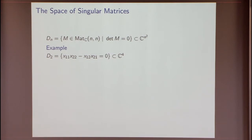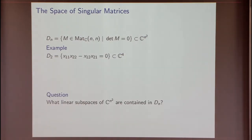Let's start out by looking at the space of singular matrices. I'll denote this by D sub n. This consists of those n by n matrices over C which have vanishing determinant. So this is a hypersurface in matrix space C^(n²), cut out by the degree n determinant polynomial. For example, we can look at D_2, the space of singular 2 by 2 matrices, cut out by the polynomial x₁₁x₂₂ minus x₁₂x₂₁.